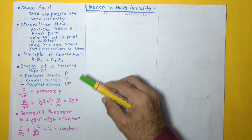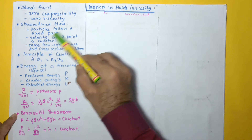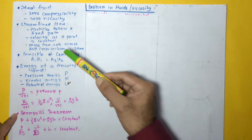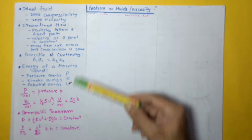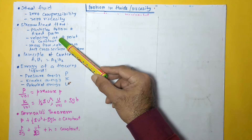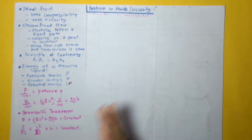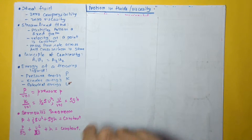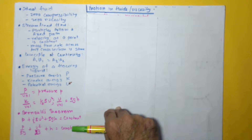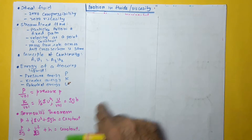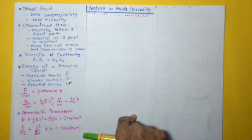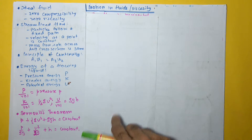We also deal with streamlined flow. Streamline flow is a flow in which the particles follow a fixed path — every particle which enters at a particular location in the pipe follows a fixed path, known as streamlines. Secondly, the velocity at a given point is constant, though velocity at different points in the pipe may differ. Thirdly, mass flow rate at any cross section is the same.